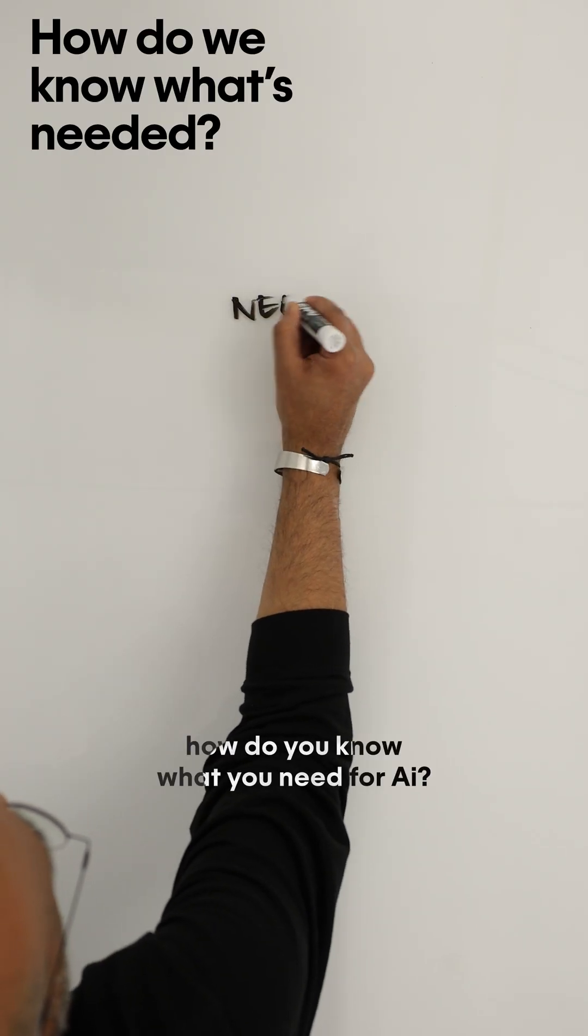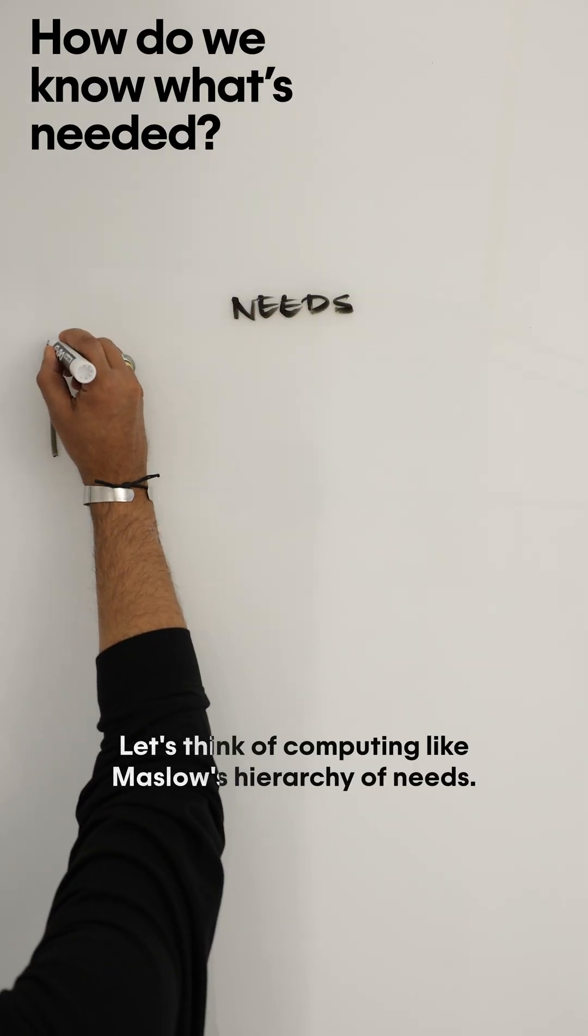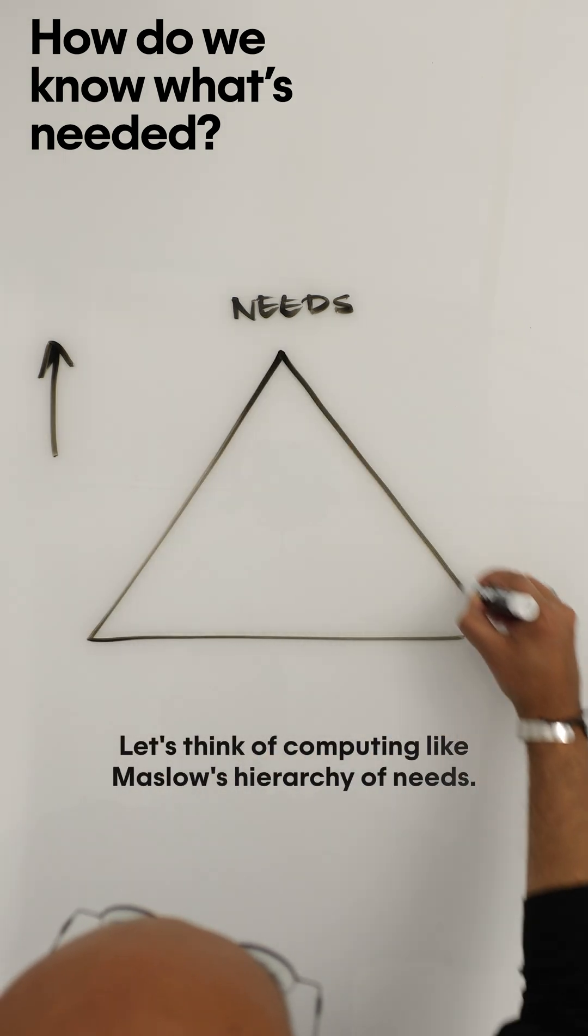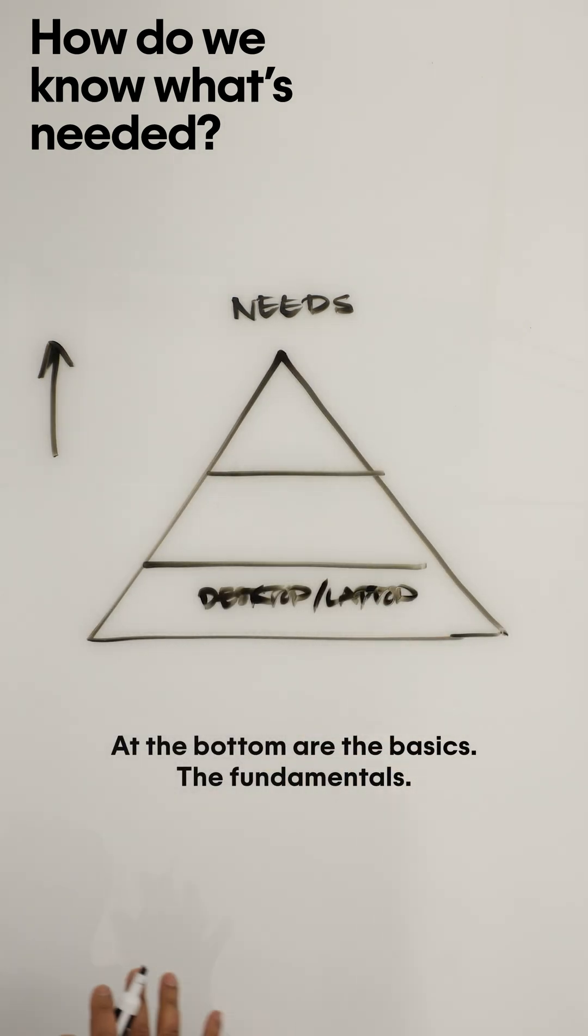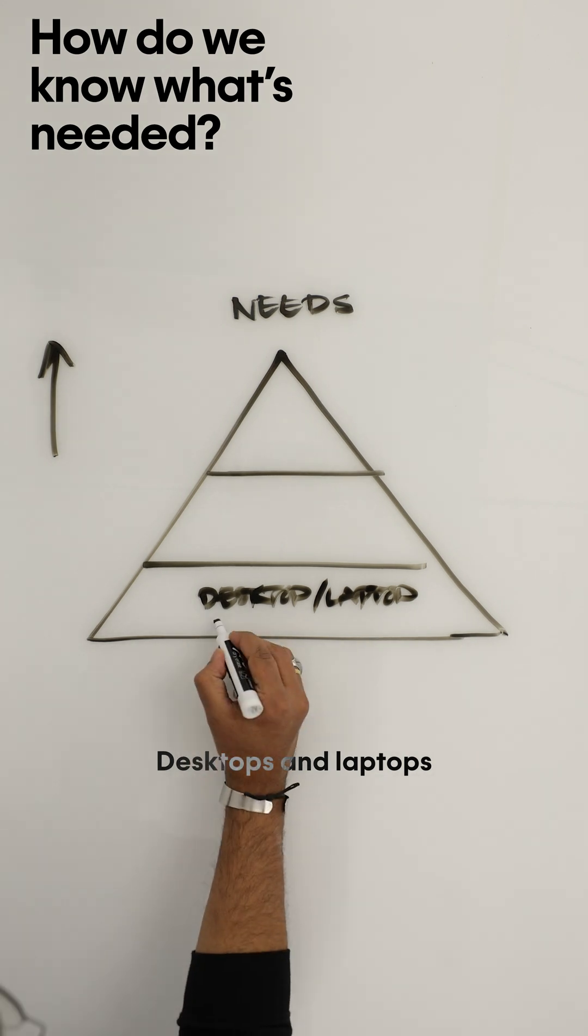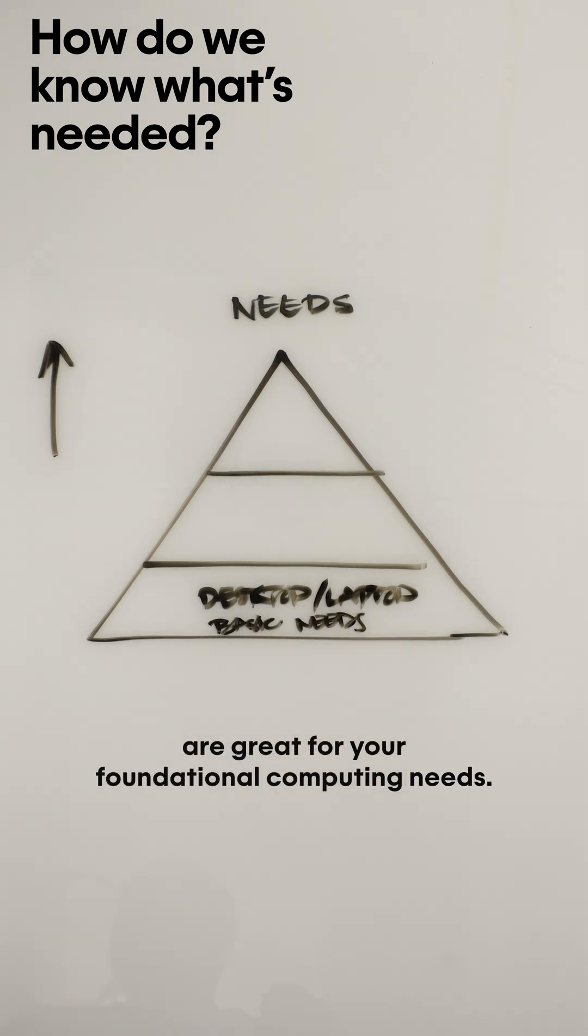Okay, so how do you know what you need for AI? Let's think of computing like Maslow's hierarchy of needs. At the bottom are the basics, the fundamentals. Desktops and laptops are great for your foundational computing needs.